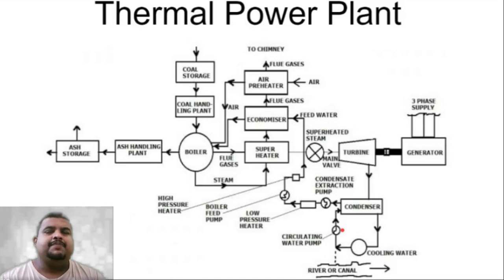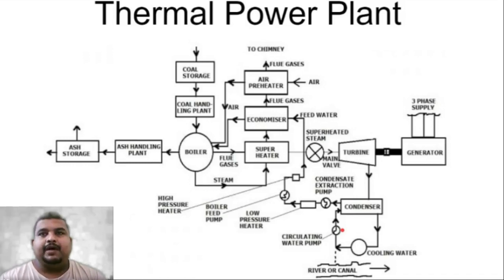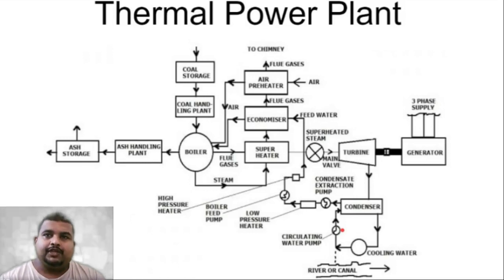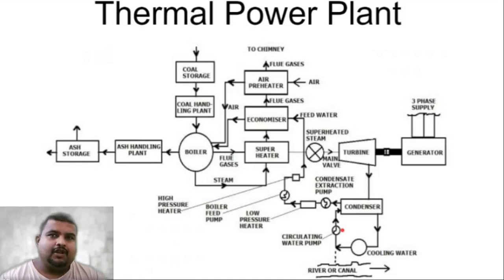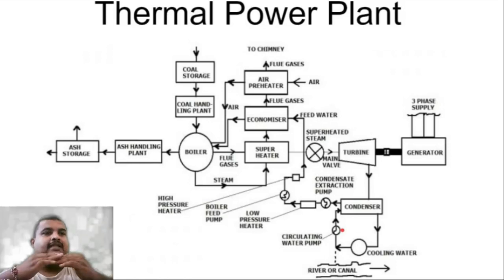The boiler feed pump is a pump in the entire power system because of which your entire cycle runs properly. The BFP provides water to the boiler at a pressure higher than the boiler's own pressure. The water coming from the CEP is heated here in stages: LP heater 1, LP heater 2, LP heater 3 — and after that it goes towards the boiler feed pump. Before the BFP there is a device called a dearator, which separates any air accumulated in the condensate from the water.